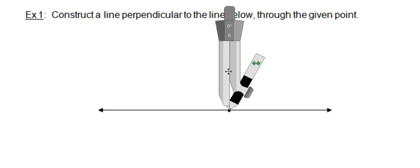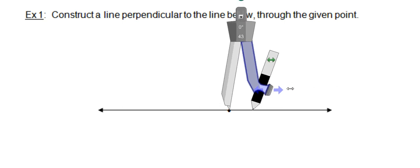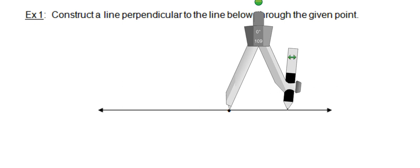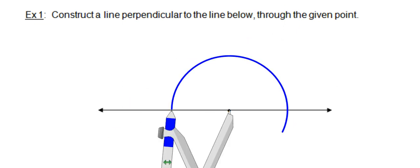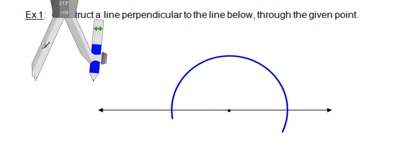I'll get my compass out and draw a semicircle or half an arc — you can draw the whole circle if you prefer. This point is the center of our circle, and in particular, it's the midpoint of the segment whose endpoints are on the circle. So if we construct the perpendicular bisector of the segment determined by the two endpoints on the circle, it will be perpendicular and pass through that midpoint.